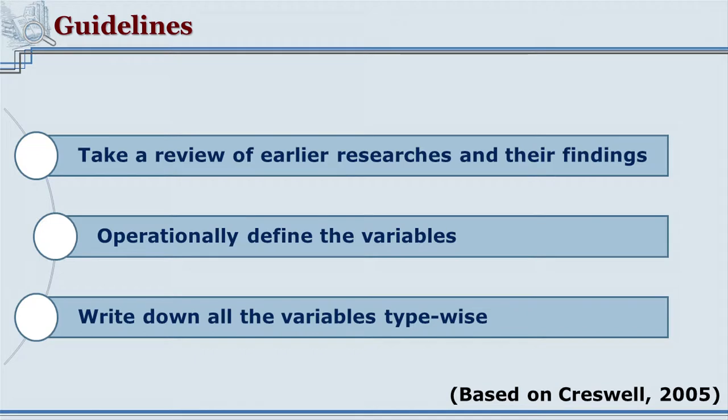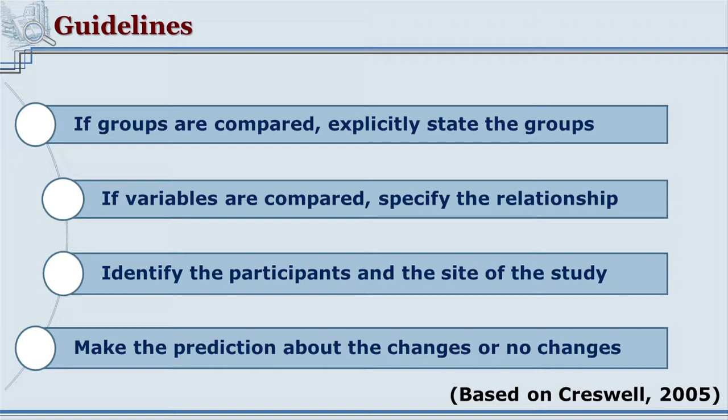We had discussed variables earlier and how important it is to list all of them. When we list down all the variables in the study, that exercise helps in writing the hypothesis. If a study is comparing groups, the groups need to be explicitly written — for example, if the comparison is between high and low levels of creativity, or between genders such as men and women, those categories should be specified.